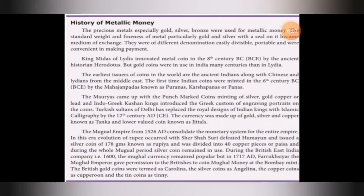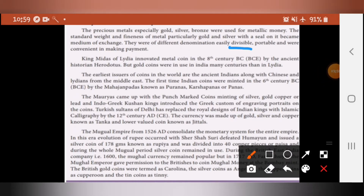The history of metallic money: precious metals, especially gold, silver, and bronze, were used for metallic monies. The standard weight and fineness of metal, particularly gold and silver with a seal on it, became a medium of money. A metal with an embedded seal on it was called a coin. Coins were of different denominations, easily divisible, portable, and convenient for making payment. King Midas of Lydia innovated metal coins in the 8th century BC, according to ancient historian Herodotus.